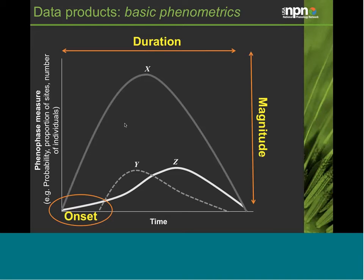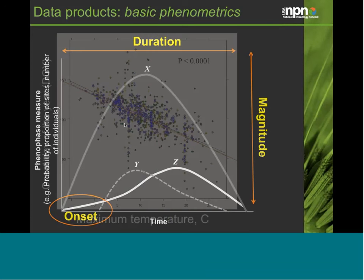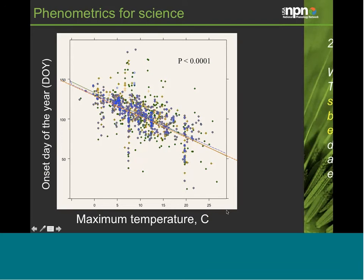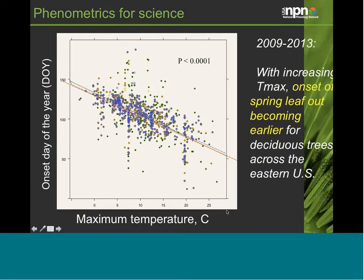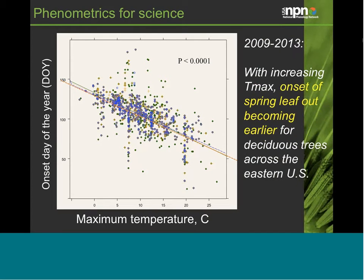One example is looking at the onset of leafing of eastern deciduous trees across a number of years in relation to maximum temperature. Between 2009 and 2013, with increasing temperatures, the onset of spring leaf-out is becoming earlier for these deciduous tree species across the eastern U.S. This kind of information at the regional and continental level helps frame the science and understand broader planetary-scale trends.